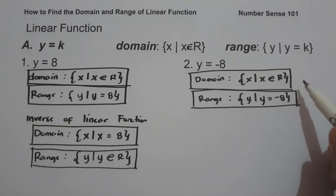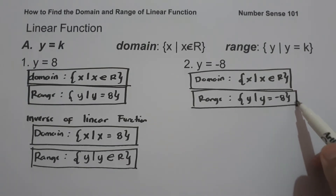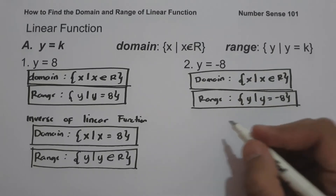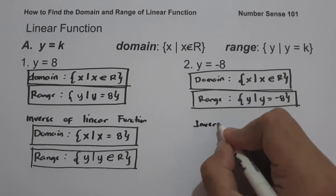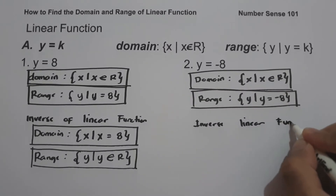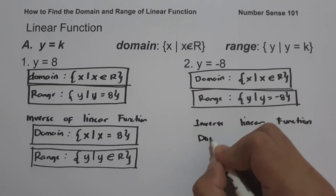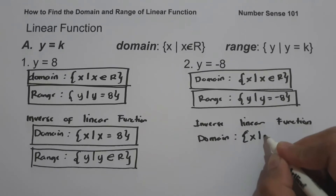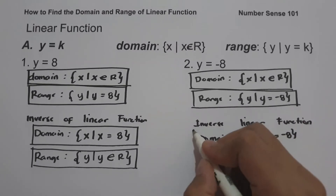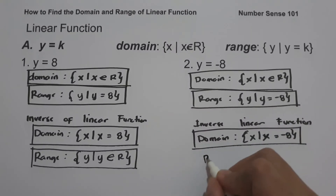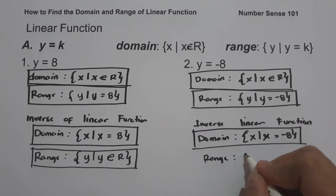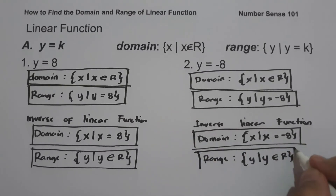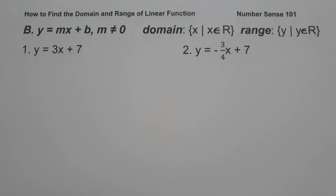To find the domain and range of the inverse linear function, remember: the domain of the original function is the range of the inverse function, and the range of the original function is the domain of the inverse function. So the domain of the inverse is the set of x values such that x equals negative 8, and the range is the set of y values such that y is the set of all real numbers.